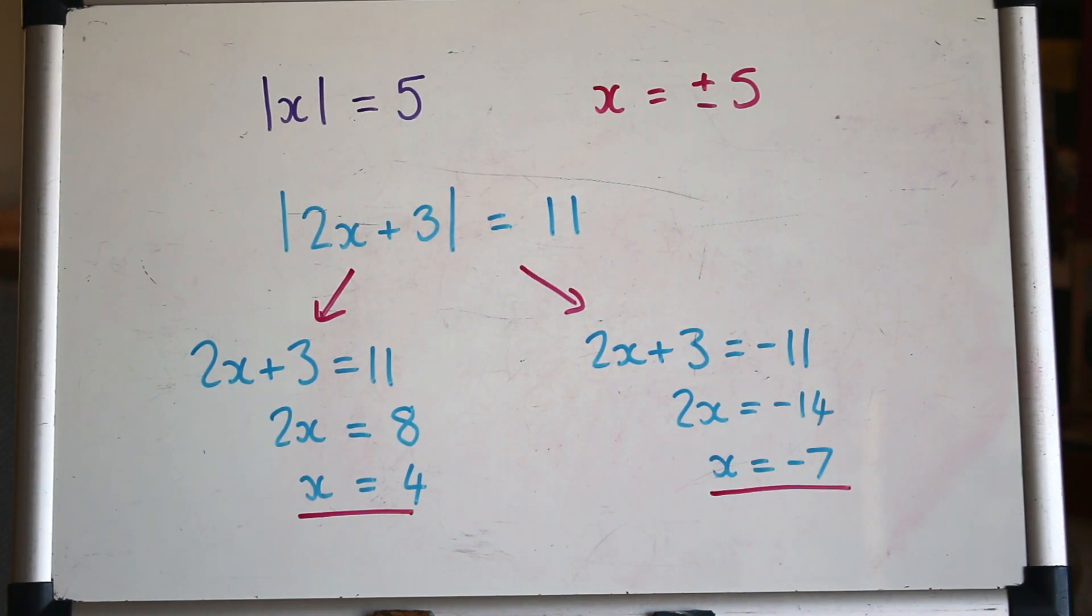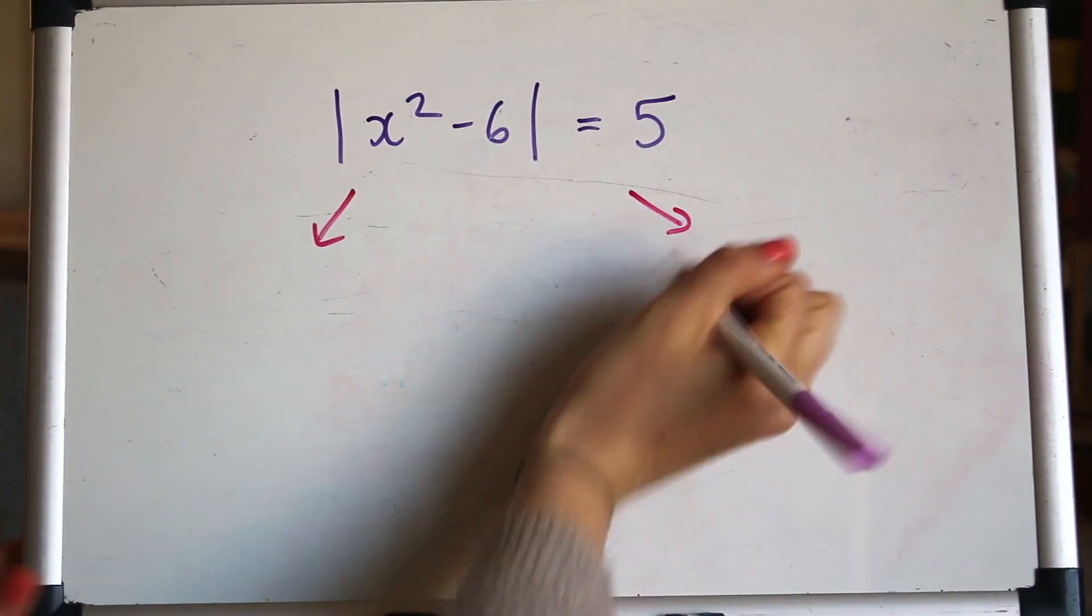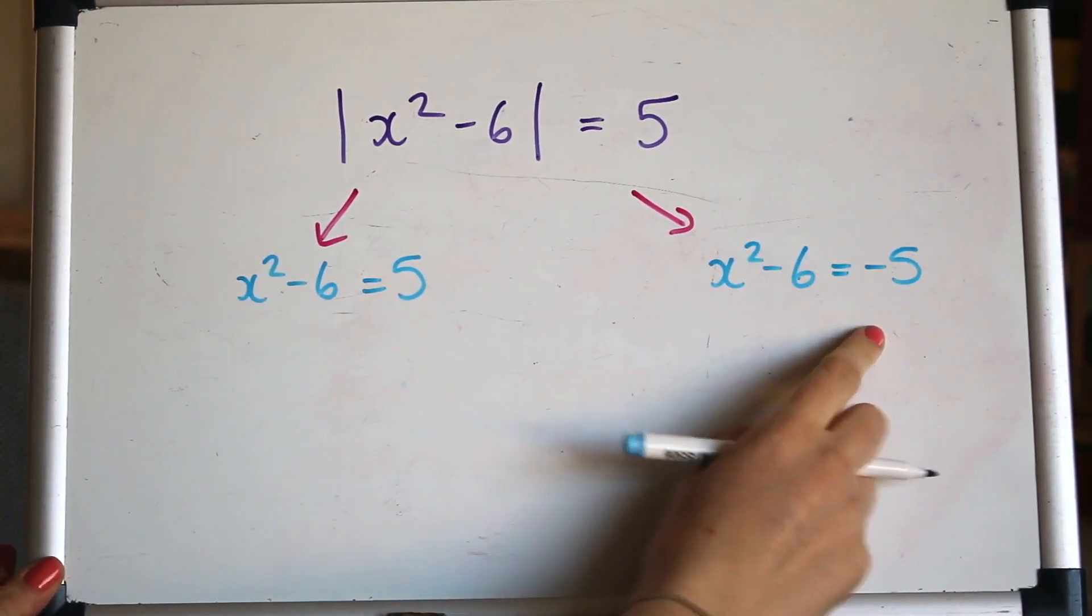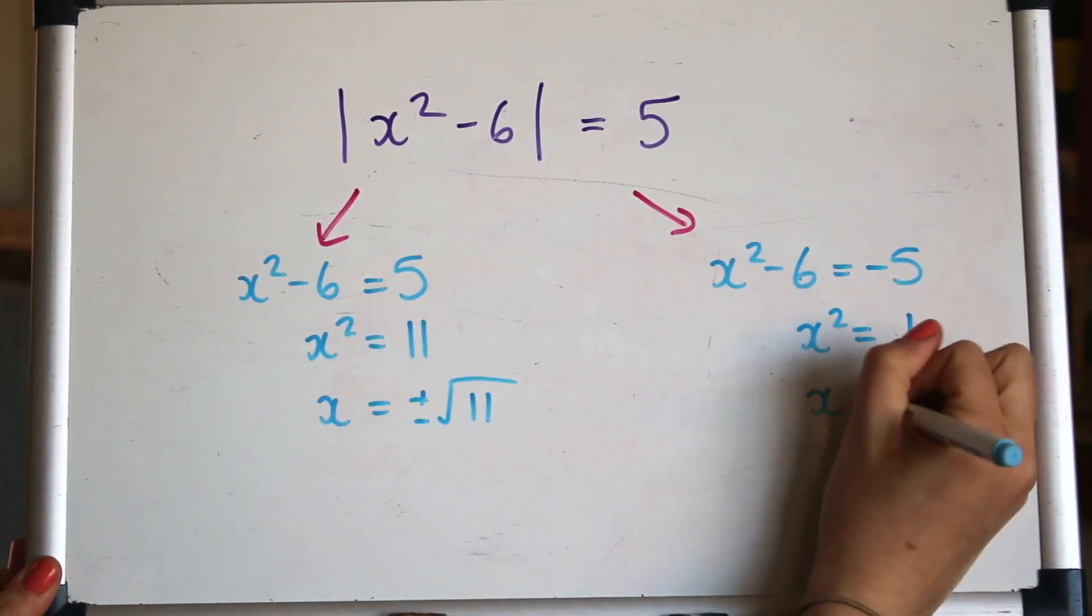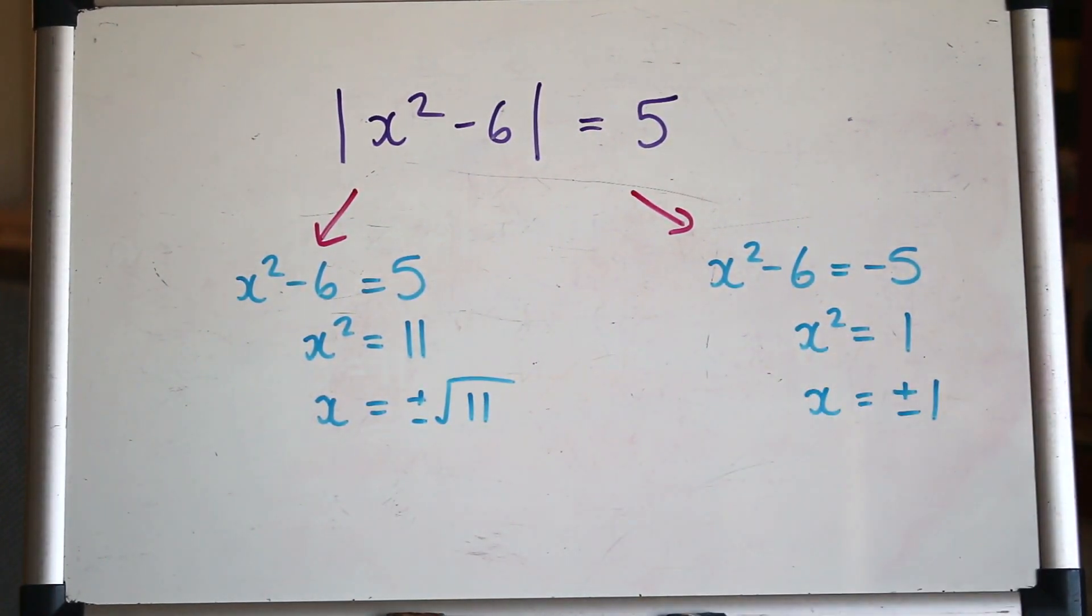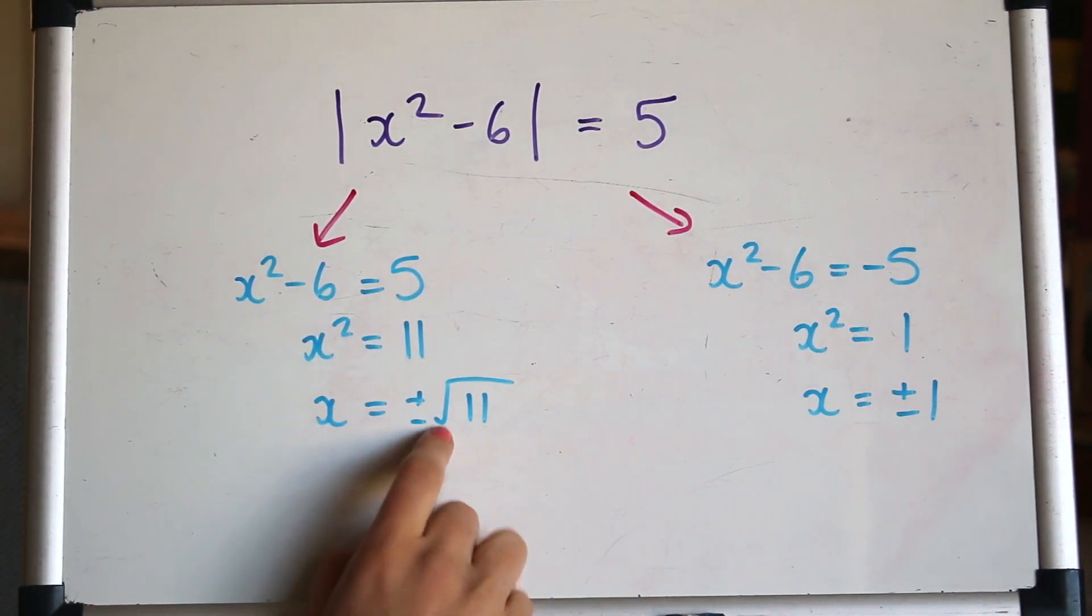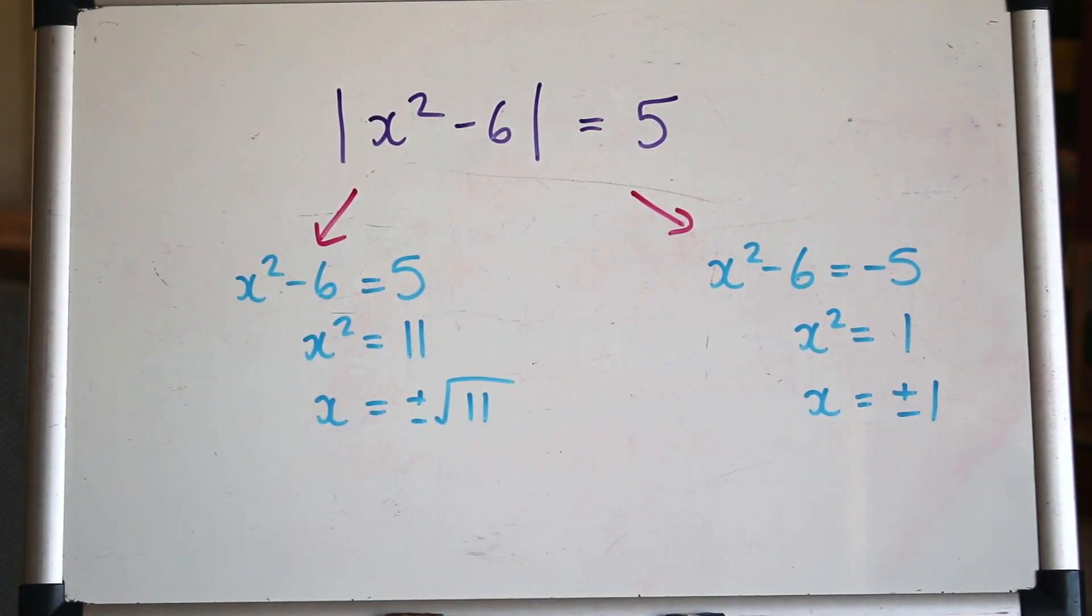Let's look at a slightly more complex equation. This time we actually get four solutions because when we square root here we get two solutions and that's for each of them. So you've got positive or negative root 11 and positive or negative 1. It also sometimes helps to draw graphs so you know how many solutions to expect. So let's look at how to draw the graphs now of modulus functions.